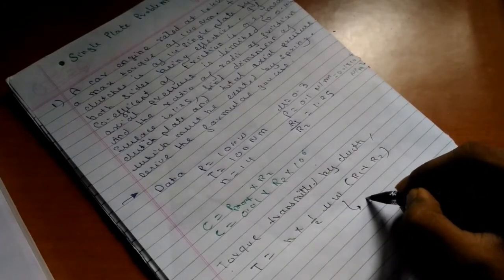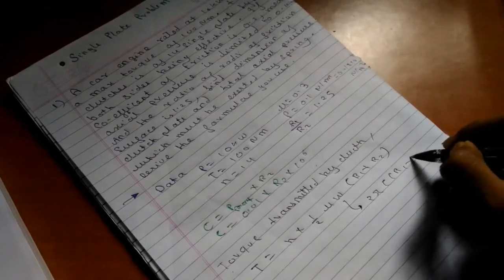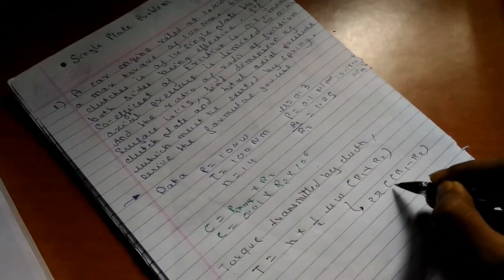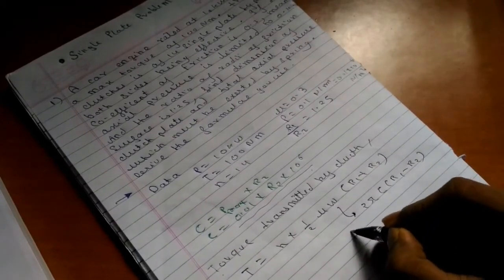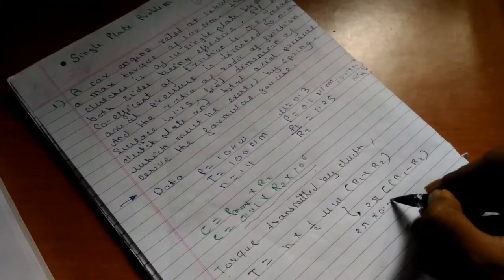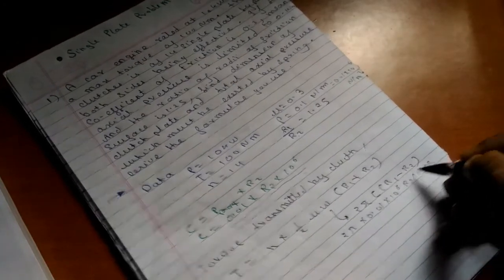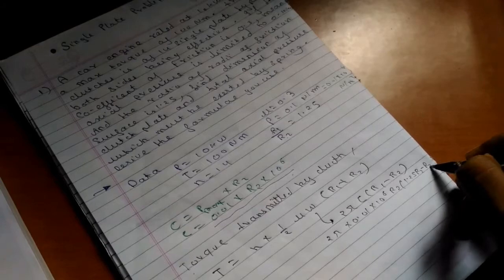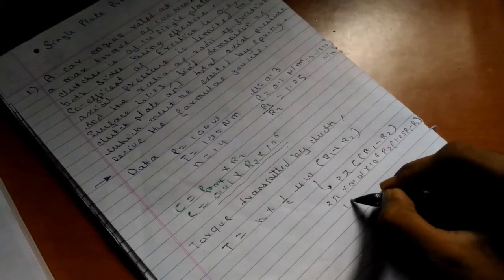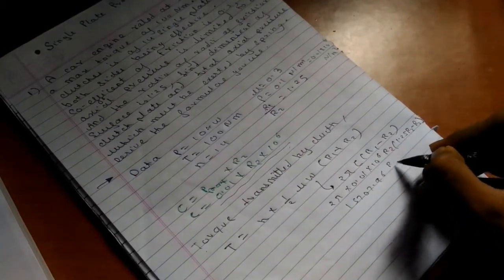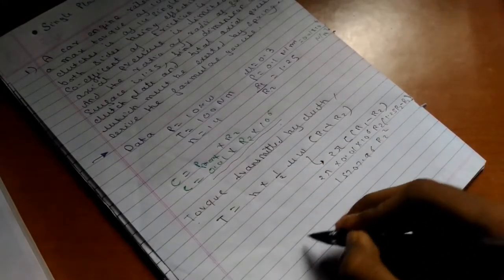Since W equals maximum axial thrust, W = 2πC(r1 - r2). Substituting the value of C, we get W = 2π × 0.01 × 10^6 × r2 × (1.25r2 - r2). After calculation, we get W = 15707.96 × r2².